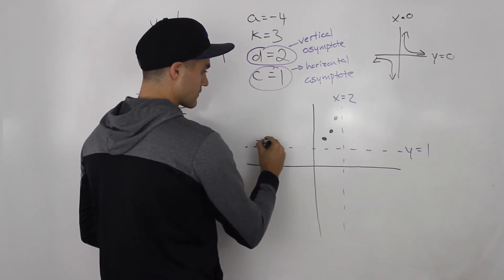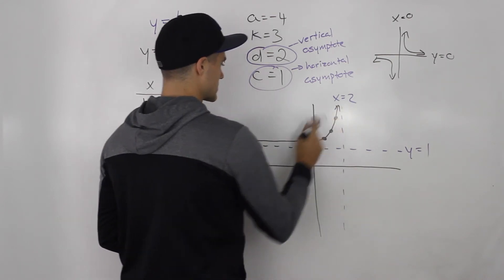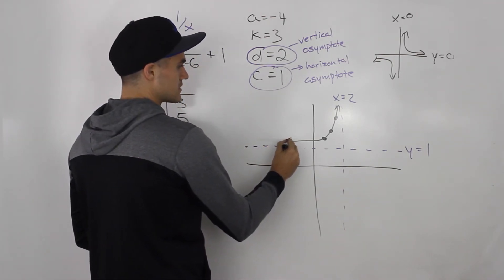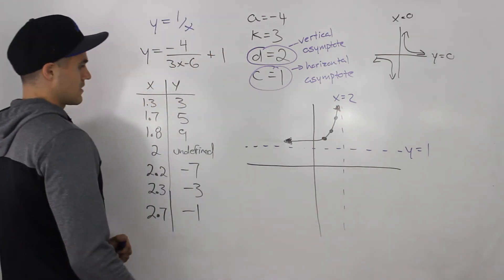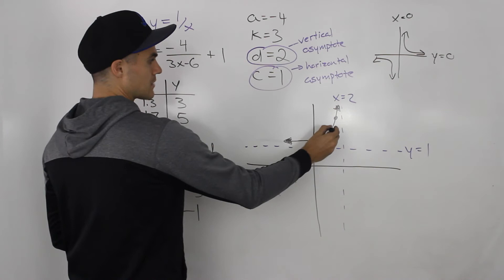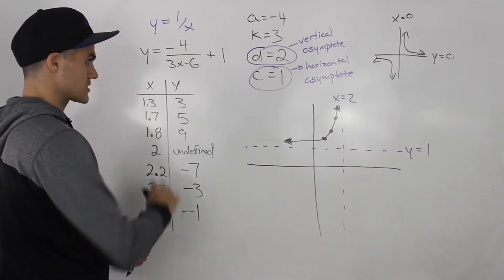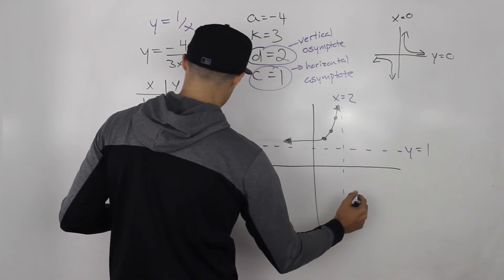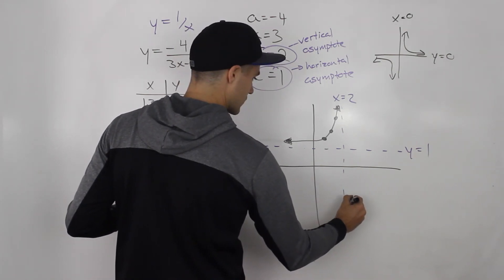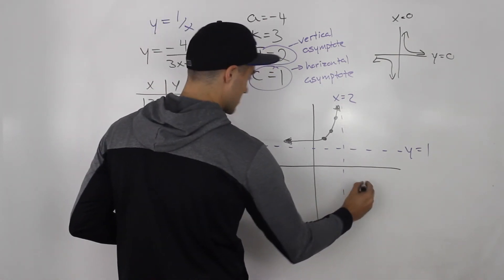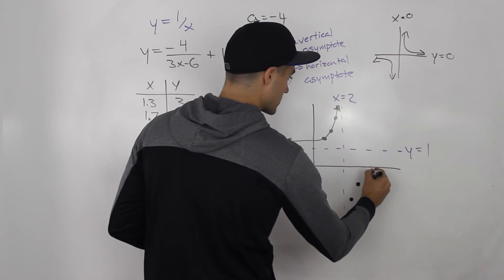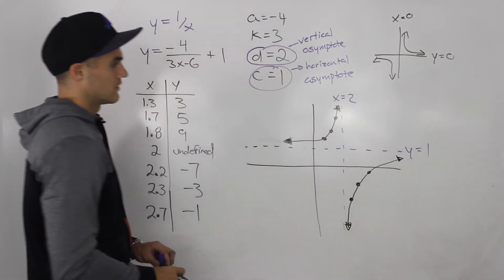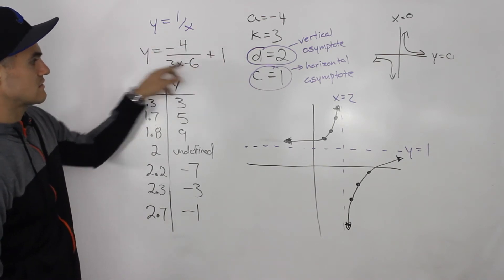This portion of the graph looks something like this — it keeps going like that. Note this is not to scale; I'm just roughly drawing it. Then (2.2, -7) is over here, (2.3, -3) is maybe here, and (2.7, -1) is maybe like here. So this portion of the graph looks something like that. That's how this function looks. For reciprocal functions, always draw the vertical and horizontal asymptotes first, then plot your points.